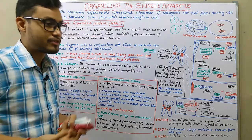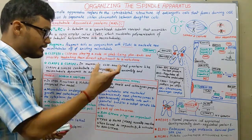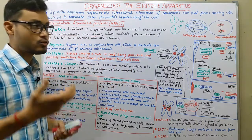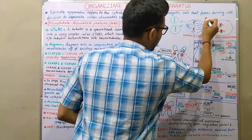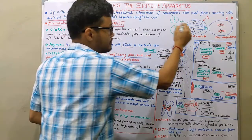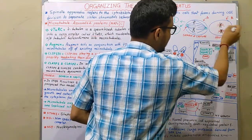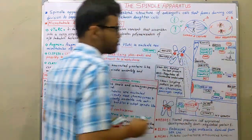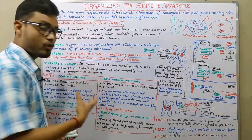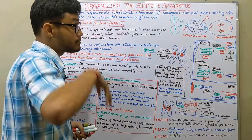Here two models come out. In those particular cells which have centrosomes, there is a model called the centrosome-mediated search and capture model. In another cell which lacks centrosomes — let's call them cell A with centrosomes and cell B without centrosomes — in cell A there is clearly a presence of centrosome with centrioles inside, but in cell B there is no centrosome present. For cells with centrosomes, the search and capture model comes into play, and for cells which lack centrosomes, the self-organizing model comes into play.